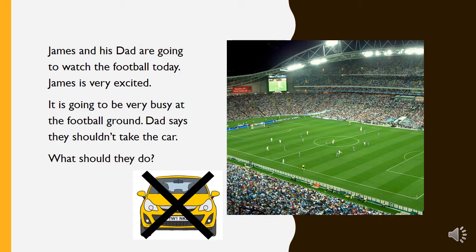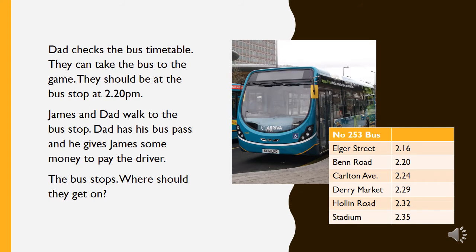James and his dad are going to watch the football today. James is very excited. It's going to be very busy at the football ground. Dad says they shouldn't take the car. What should they do? Dad checks the bus timetable. They can take the bus to the game. They should be at the bus stop at 2.20pm. James and Dad walk to the bus stop. Dad has his bus pass and gives James some money to pay the driver.